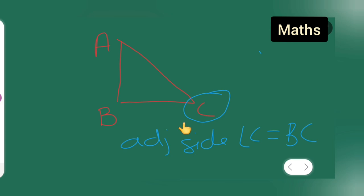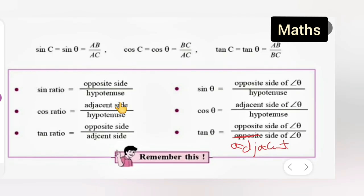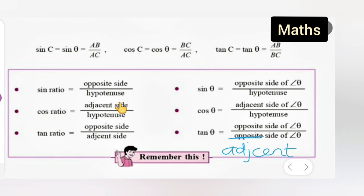This was the last part on formulas. Please make a correction here — in the tan theta formula, replace 'opposite' with 'adjacent' in the denominator. It should be opposite side of angle theta upon adjacent side of angle theta. Everything else is correct. I hope you all have understood today's class. Thanks for watching.